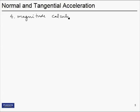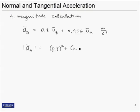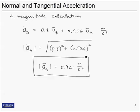Step four is the magnitude calculation. The total acceleration at A is 0.8 in the tangential direction plus 0.456 in the normal direction, both in meters per second squared. Since the normal and tangential directions are perpendicular to each other, the magnitude is the square root of the sum of the squares: √(0.8² + 0.456²). This gives a magnitude of acceleration equal to 0.921 meters per second squared.